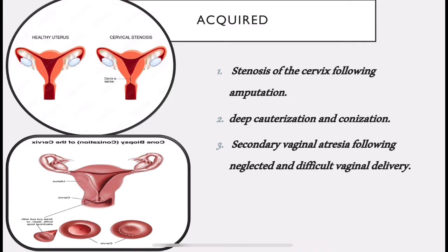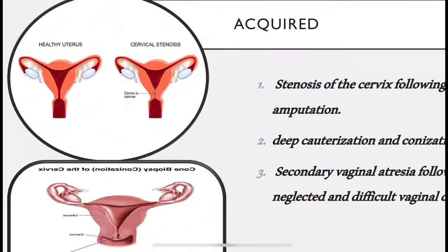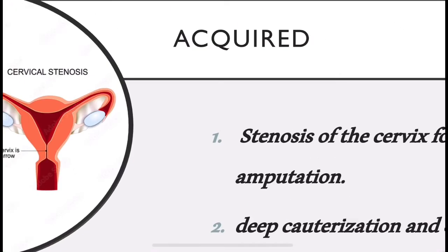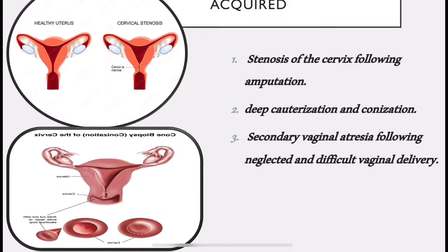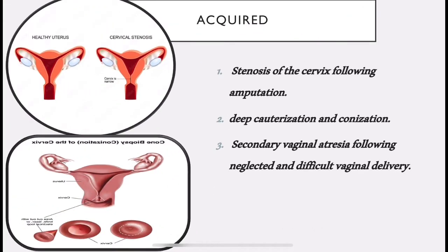Acquired causes include: stenosis of the cervix following amputation (stenosis means narrowing); deep cauterization and conization, which are treatment procedures done for cervical cancers where precancerous tissue is removed in a cone shape — deep conization and cauterization can result in cryptomenorrhea.